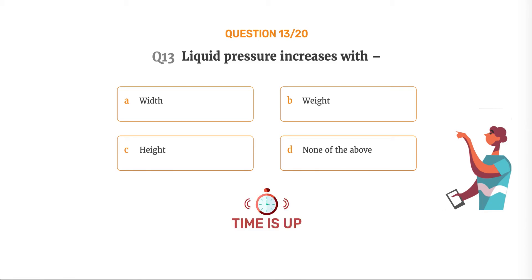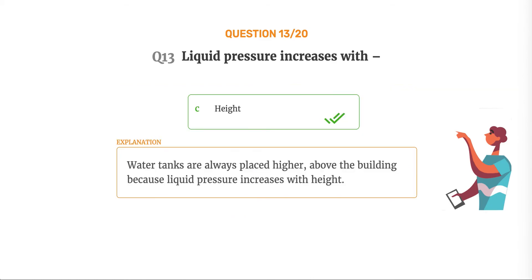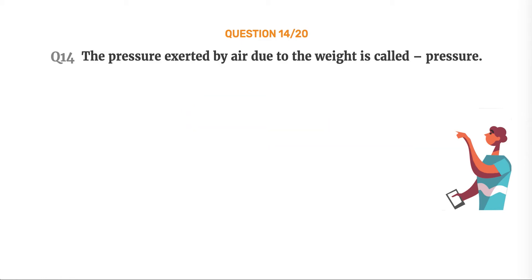The correct answer is Option C: Height. Water tanks are always placed higher above the building because liquid pressure increases with height.